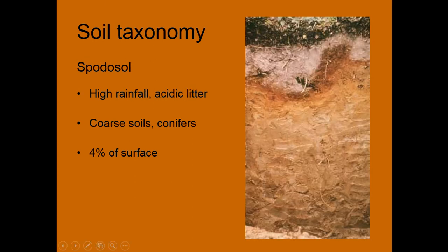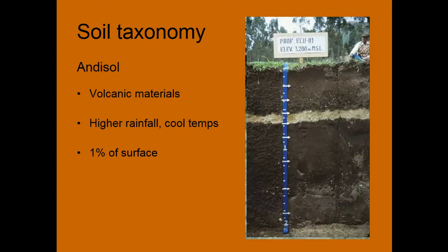Spodosols are identified with the spodic horizon. This is iron that's leached out and deposited. This often has to do with pH, so we find these in coarse soils because we need lots of water movement, and then a low pH and an acidic litter. So often found under conifer forests, about 4% of the Earth's surface.